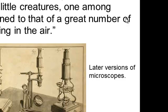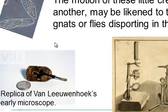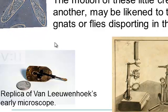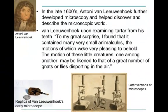He looked at all sorts of materials — blood, skin, sperm. He even scraped his teeth, and upon doing so the following quotation reflects what he saw: 'To my great surprise, I found that it contained many very small animalcules, the motions of which were very pleasing to behold. The motion of these little creatures may be likened to that of a great number of gnats or flies sporting in the air.' He combined the words 'animal' and 'molecule' to make 'animalcules.'